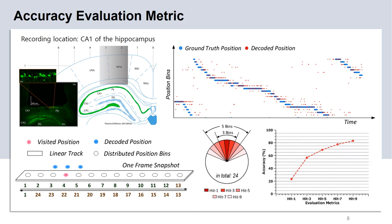In order to measure the decoding accuracy, we came up with an evaluation metric called Hit-n accuracy, in which n indicates the number of position bins we count as correct decoding around the true position bin. As the figure on the bottom right shows, as we enlarge n from 1 to 9, we observe gradually increased decoding accuracy for the demonstration example shown in this slide.